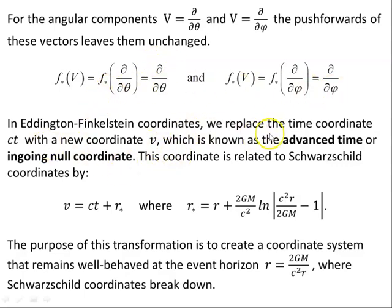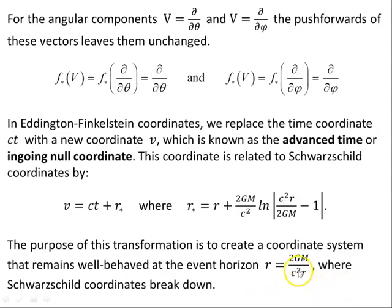In Eddington-Finkelstein coordinates, we replace the time coordinate ct with a new coordinate v, known as the advanced time or ingoing null coordinate. This coordinate is related to Schwarzschild coordinates by v = ct + r★. The purpose of this transformation is to create a coordinate system that remains well-behaved at the event horizon r = 2GM/c², where Schwarzschild coordinates break down and produce a coordinate singularity — which is not a physical singularity, but simply our choice of coordinates.